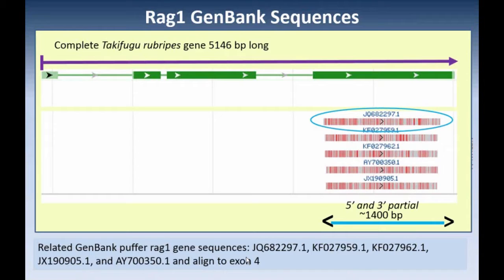Please recognize that five prime and three prime partial says nothing about whether it's untranslated. You want to make sure that you keep straight the five prime and three prime nature of your sequence data.